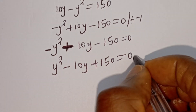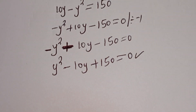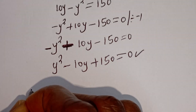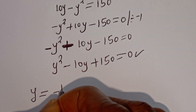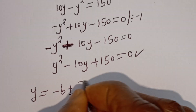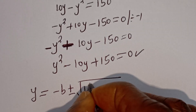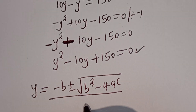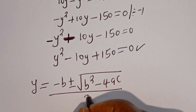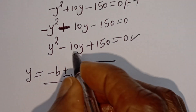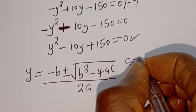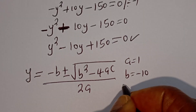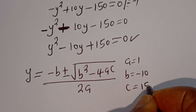This is a quadratic equation which can be solved with the quadratic formula. From the quadratic general formula, Y is equal to minus B plus or minus square root of B squared minus 4AC, divided by 2A. From this equation, A is equal to 1, B is equal to minus 10, and C is equal to 150.